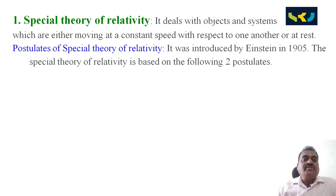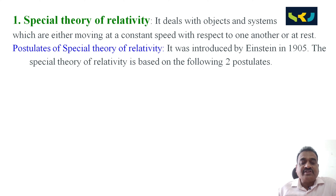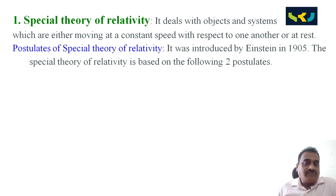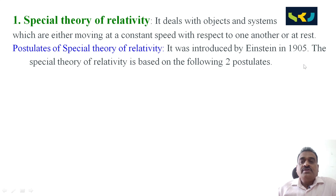The special theory of relativity deals with objects and systems which are either moving at a constant speed with respect to one another or at rest. The special theory of relativity was introduced by Einstein in 1905, and it is based on the following two postulates: number one, the principle of relativity; number two, the principle of constancy of speed of light.